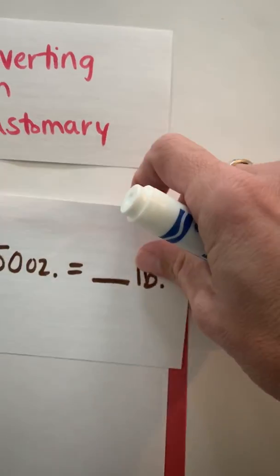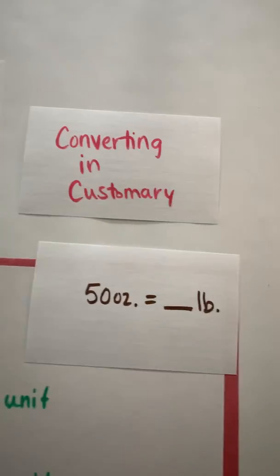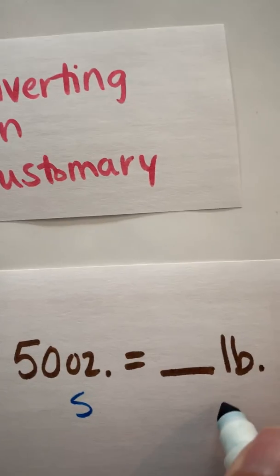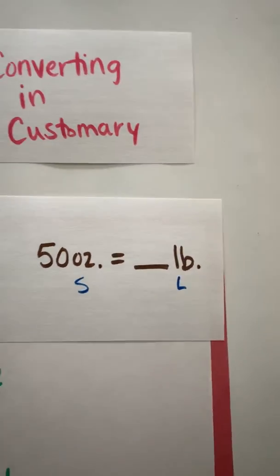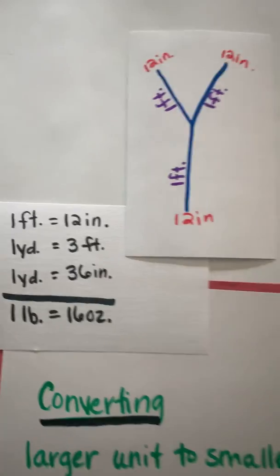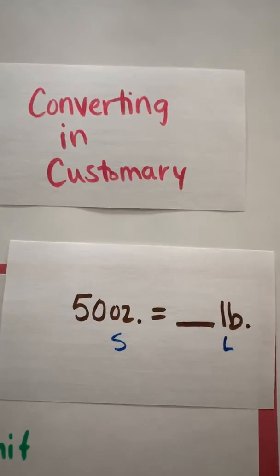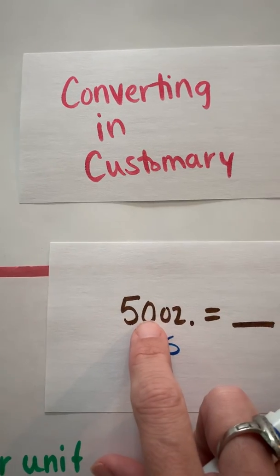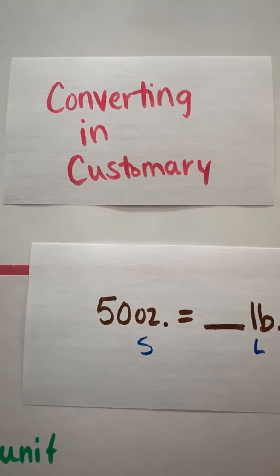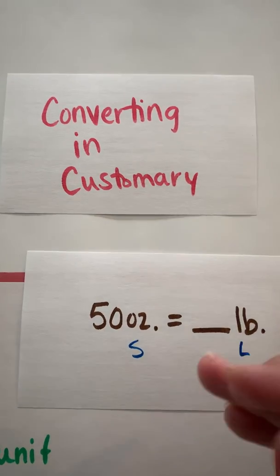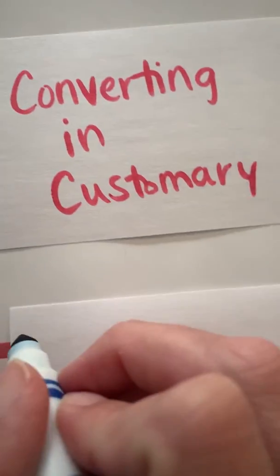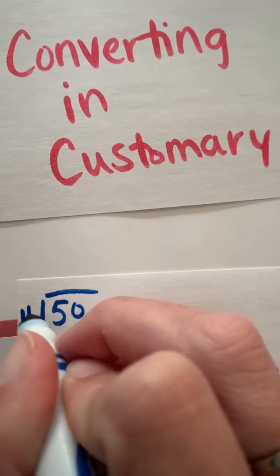So let's try one more and we'll be done. We're converting in customary. So we're changing from ounces to pounds. I'm going from a smaller unit, that's the one I know, to a larger unit. So if I think back, remember we're supposed to be memorizing these. I know that 16 ounces are in a pound. And we talked about that I'm going to be basically breaking this 50 into groups of 16. How many groups of 16 can I get out? And we know if we're taking something and breaking it into equal groups, we are dividing. So I'm going to divide 50 by 16.